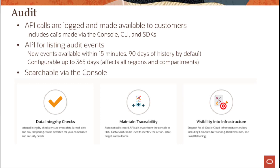What do these logs contain? The content includes what activity occurred, the user that initiated that activity, the date and time of the request, as well as source IP, user agent, and HTTP headers of that request. New events are available within 15 minutes. There is 90 days of history by default, which is configurable up to 365 days.